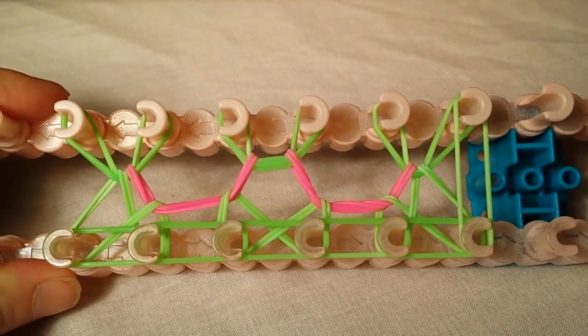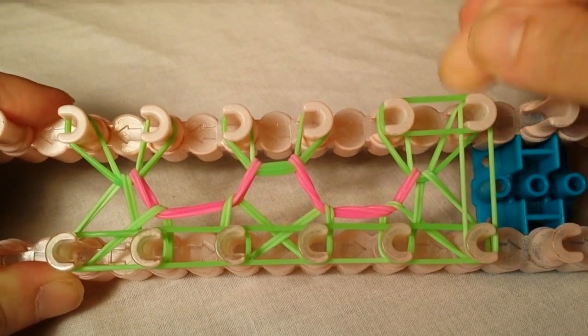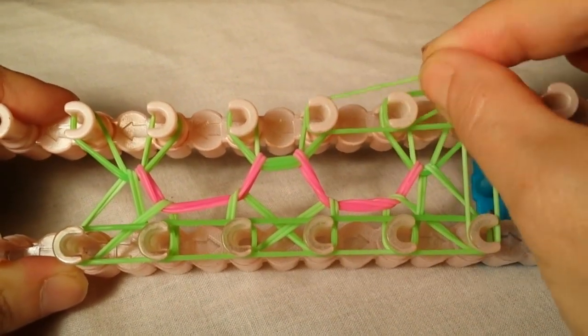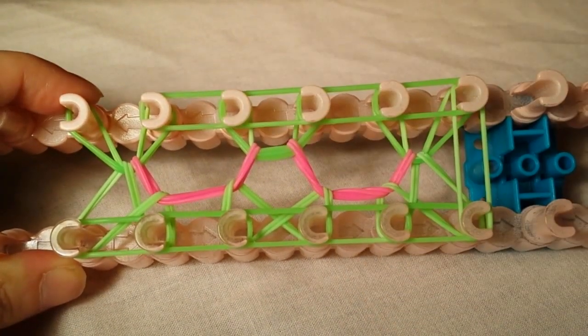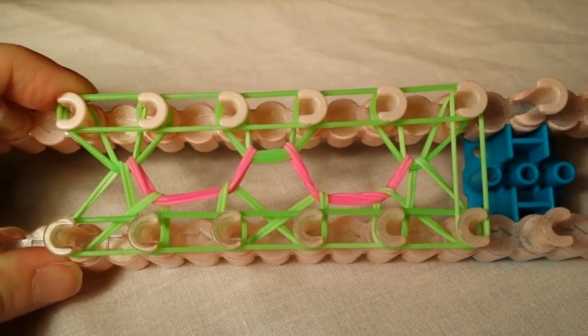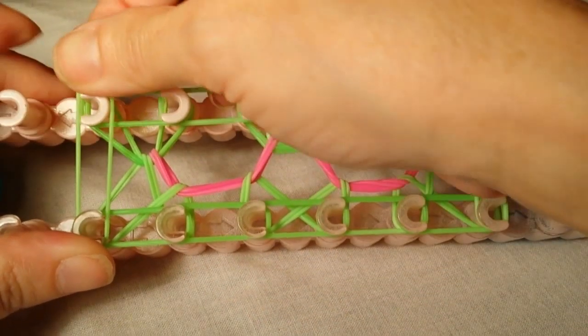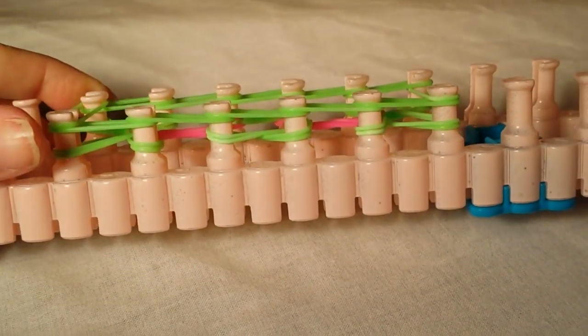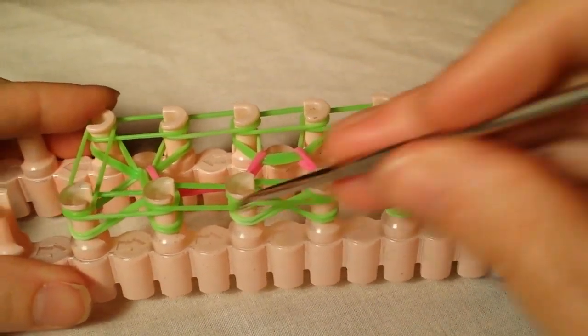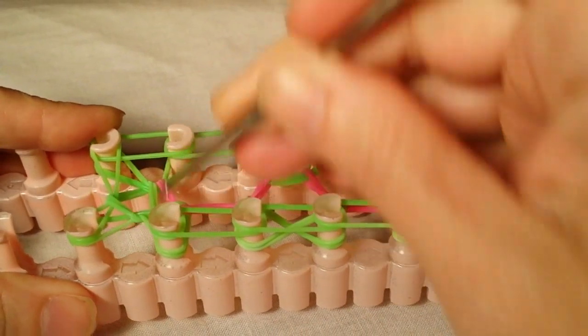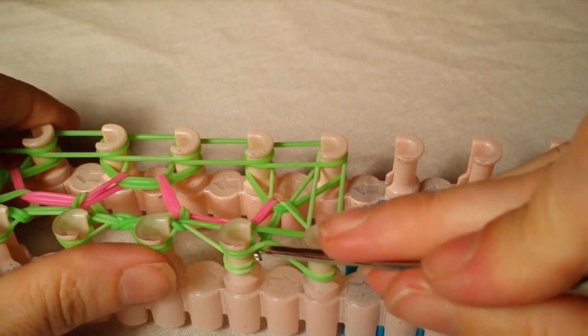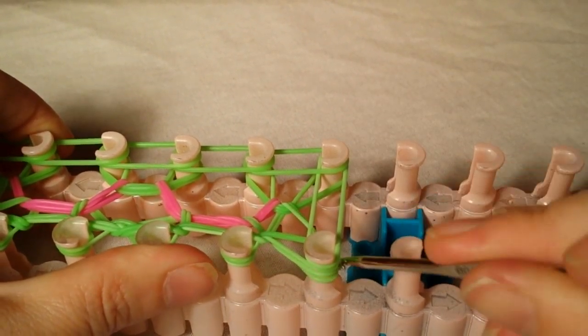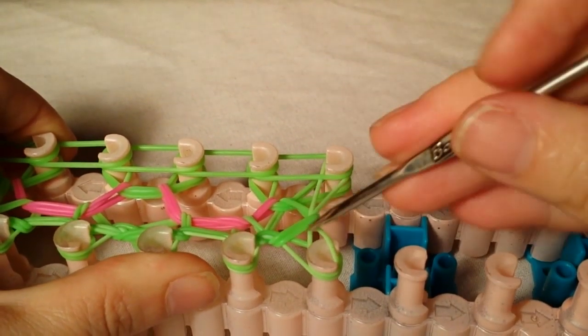It doesn't matter where you start these. Just stay in order after you've started them. So you start where you want and just go around in a circle. So you've completed your circle, and you're going to go all the way around and pull the bottom two over the top two up and around and into the center.